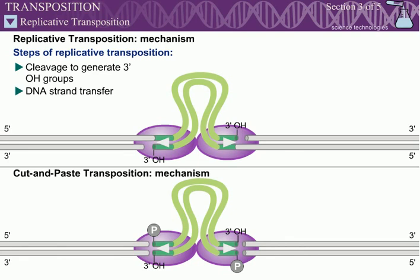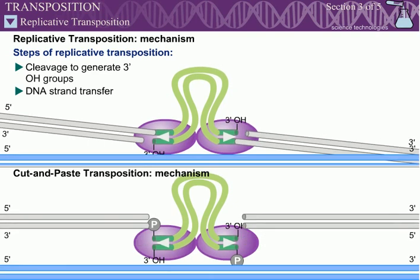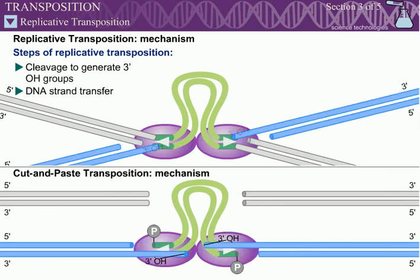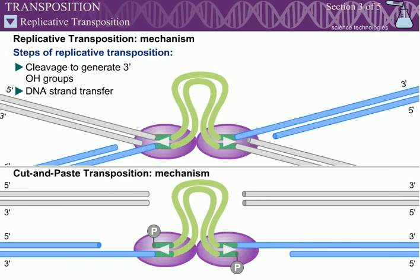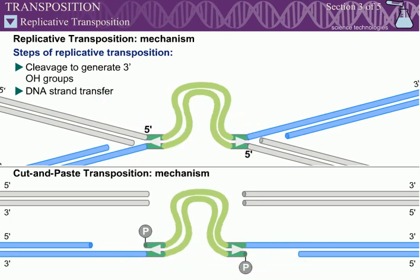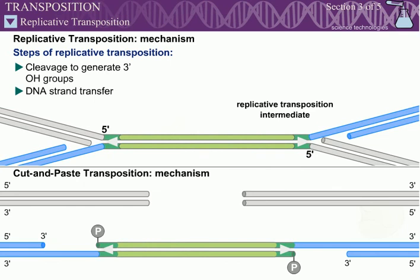As in cut-and-paste transposition, the 3' hydroxyls of the transposon DNA then attack the phosphodiester bonds at the target DNA. However, the 5' ends of the transposon sequence remain joined to the initial flanking DNA. The replicative transposition intermediate therefore consists of a doubly branched DNA molecule.